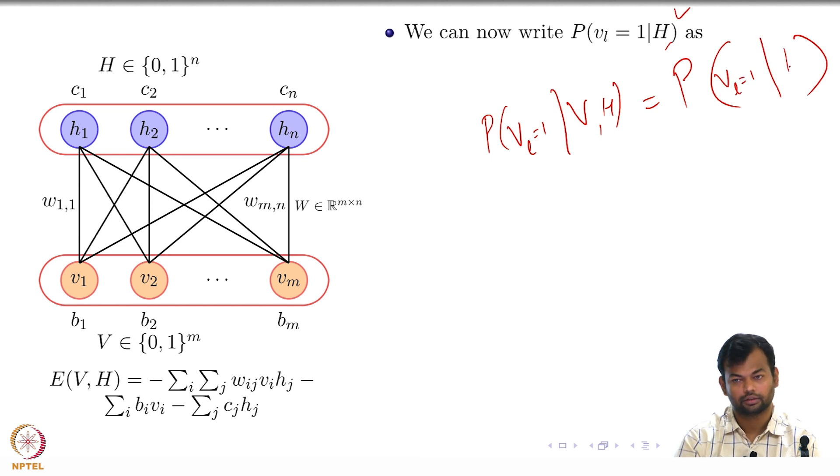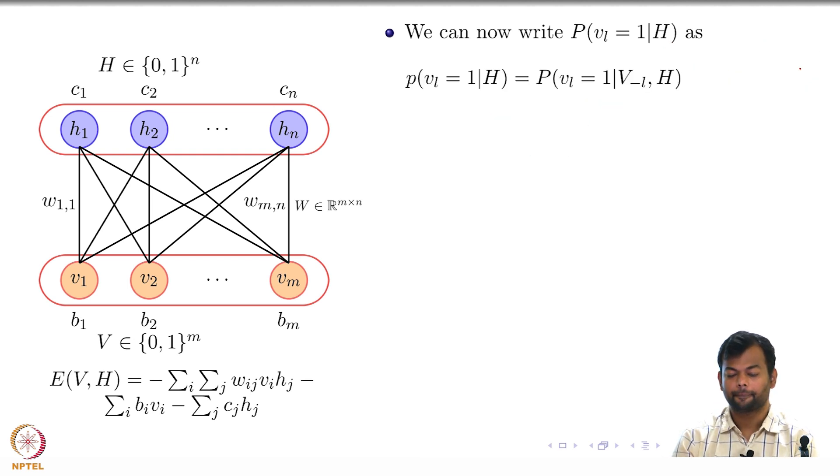With this definition, now let us try to compute a formula for V_L equal to 1 given H. And why don't I have V_{-L}, H here? I should have put this in the syllabus actually. Is that fine? Because the V's are independent given the H, right? That is as simple as that. So I can always introduce these variables here, it does not matter. Because these two are equivalent.